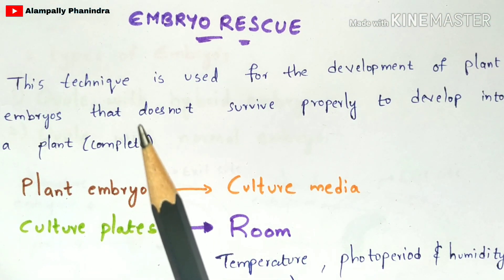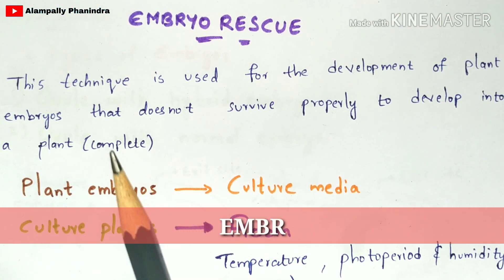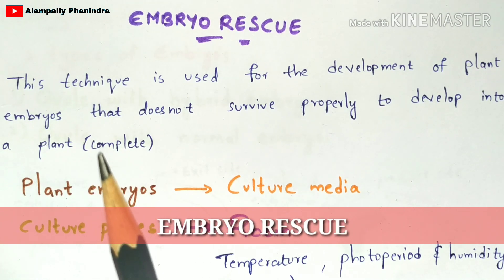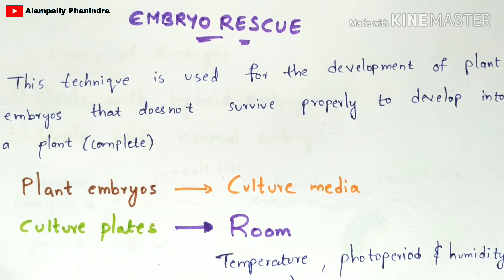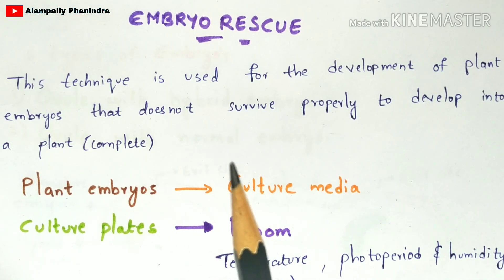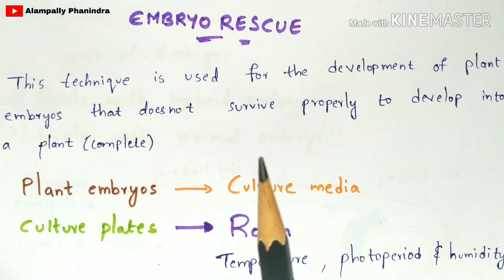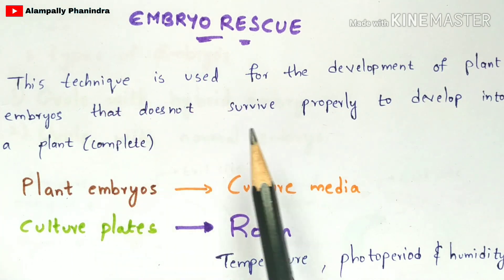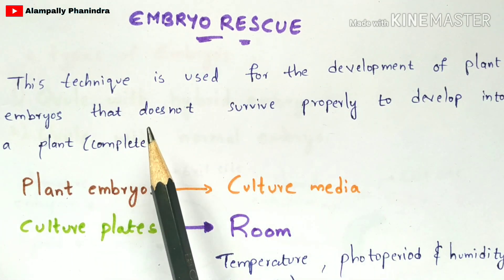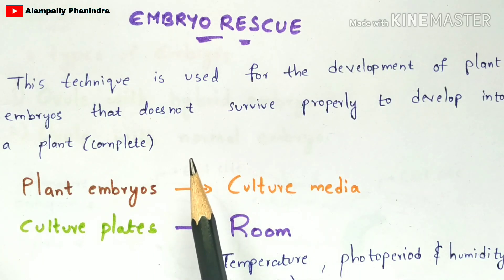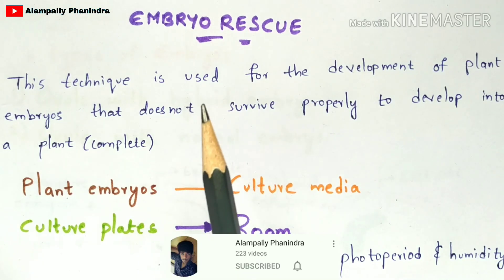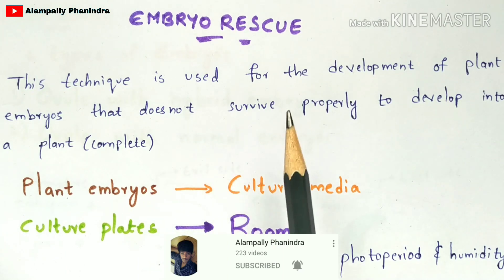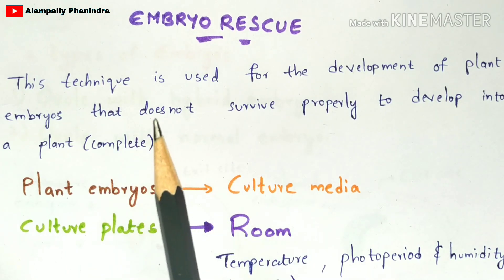In this video, let us discuss about embryo rescue — what it means, the protocol involved, why this method is used, and its applications. The technique used for the development of plant embryos that do not survive properly to develop into a complete plant is called embryo rescue. We know the normal embryo genesis process where a complete plant gets developed from the embryo.